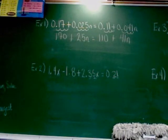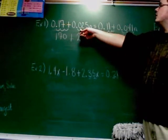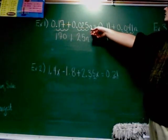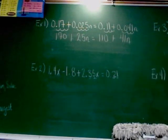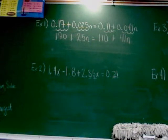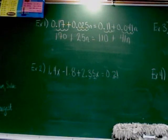A student asks: why did you move the decimal over three times? Three times because that's how many times it takes to get it out of the way in the longest decimal — three times there gets it out of the way, so you've got to do it three times in everything. Now the final problem is just what we've been doing the last several days.